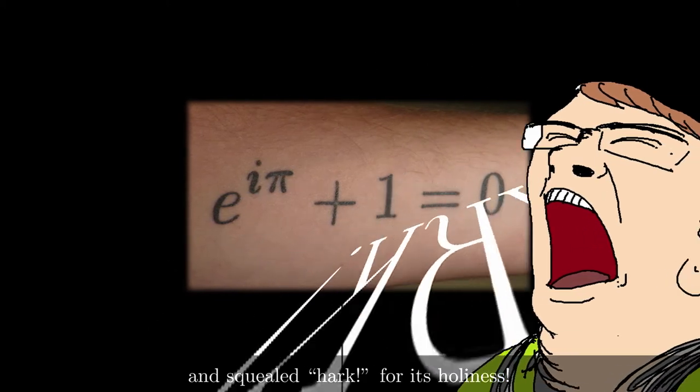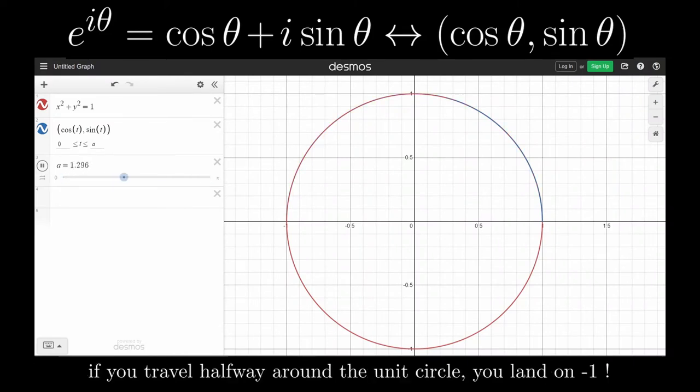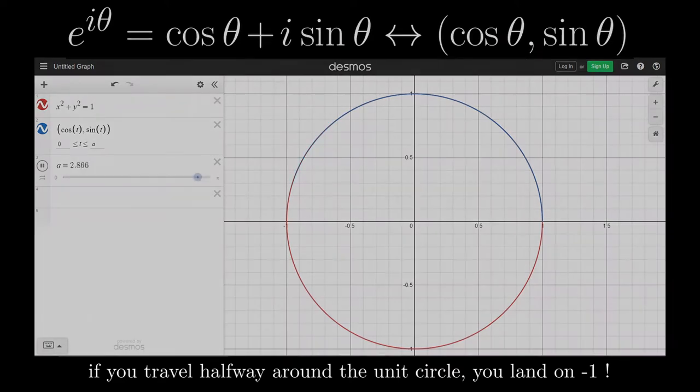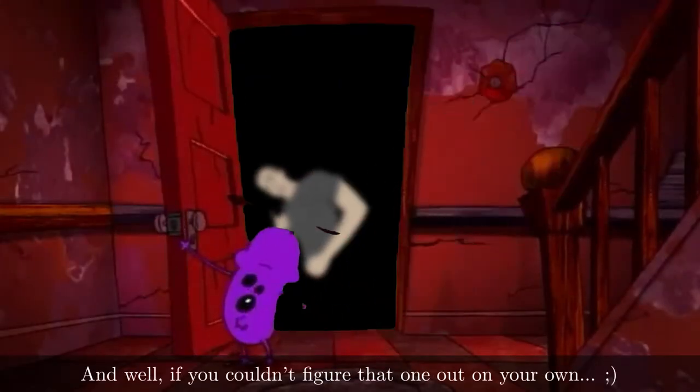I know. And squealed for its holiness. When you think about it, all Euler's identity is telling you is that if you travel halfway around the unit circle, you land on negative one. And well, if you couldn't figure that one out on your own.